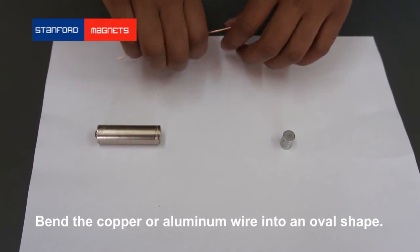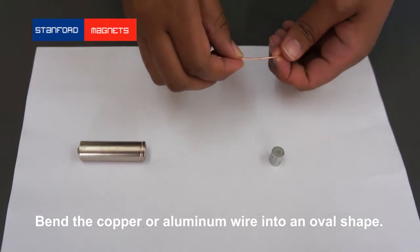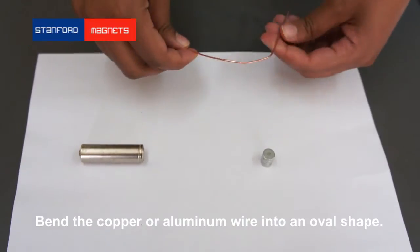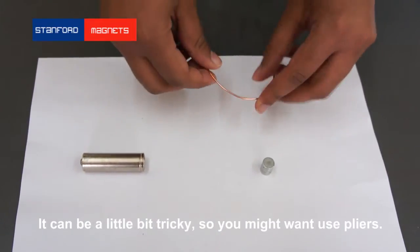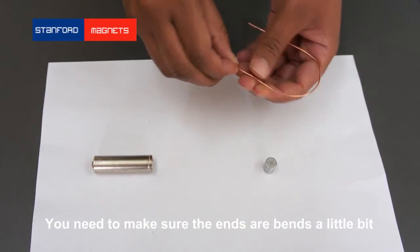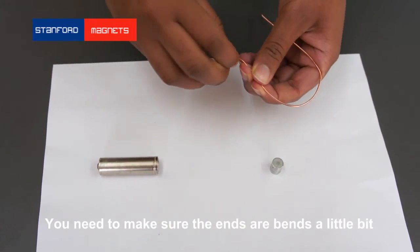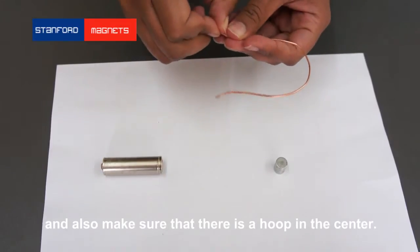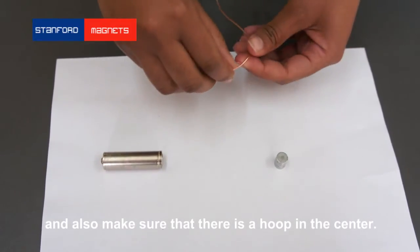Okay, let's get started. First you will need to bend the copper wire or aluminum wire into an oval shape. It can be a little bit tricky, so you might want to use pliers. You need to make sure that the ends are bent a little bit to soften it, and also make sure that there is a hoop in the center.